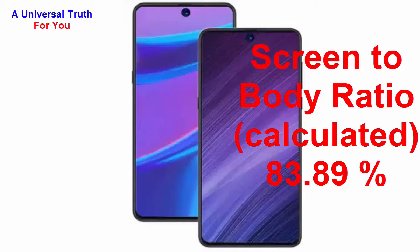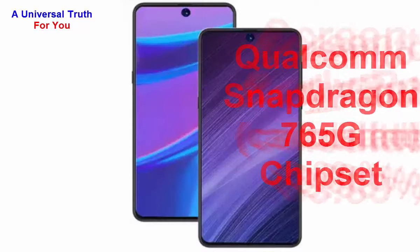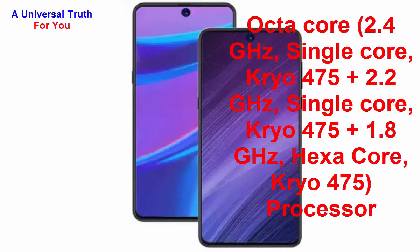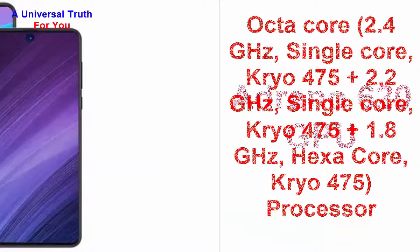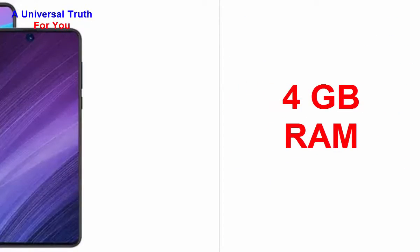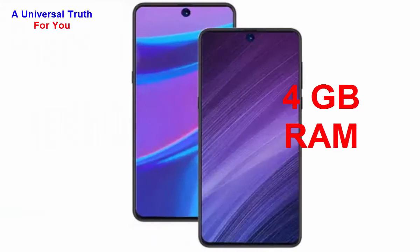Now let's go for its performance. The chipset used in this smartphone is the Qualcomm Snapdragon 765G. The processor is an octa-core — 2.4 GHz single-core Kryo 475 Prime, plus 2.2 GHz single-core Kryo 475 Gold, plus 1.8 GHz hexa-core Kryo 475 Silver. The graphics processor is the Adreno 620 GPU, with 4 GB RAM.